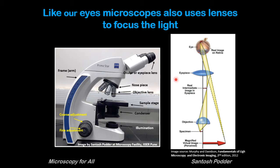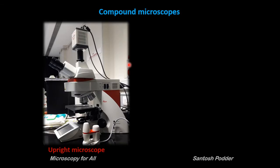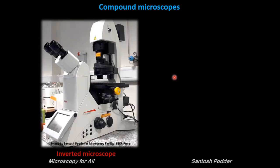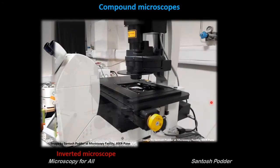Compound microscopes are so called because they are designed with a compound lens system. The objective lens provides the primary magnification, which is compounded or multiplied by the ocular lens or eyepiece. Compound microscopes can be loaded with several objectives for magnifications ranging from 5x to 100x. Eyepieces are generally 10x, resulting in a total magnification of 50x to 1000x. Compound microscopes may be upright, where objectives are above the sample stage, or inverted, where objectives are below the sample stage.